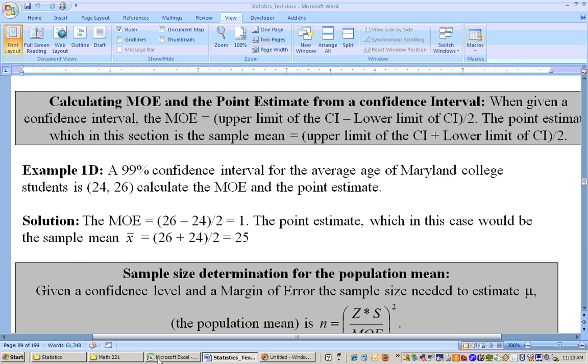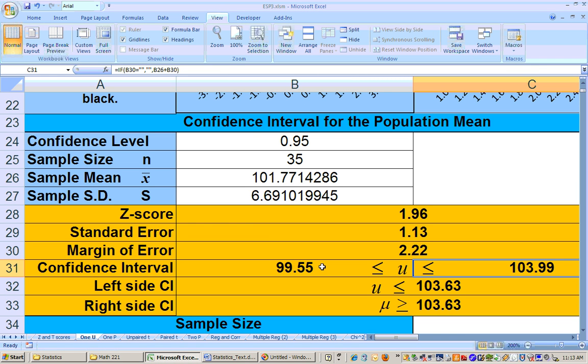The same is true with the last problem that we did. If we want to get the margin of error right here, and we just had this confidence interval kind of working the opposite way, if we had this confidence interval, how would we get this margin of error?